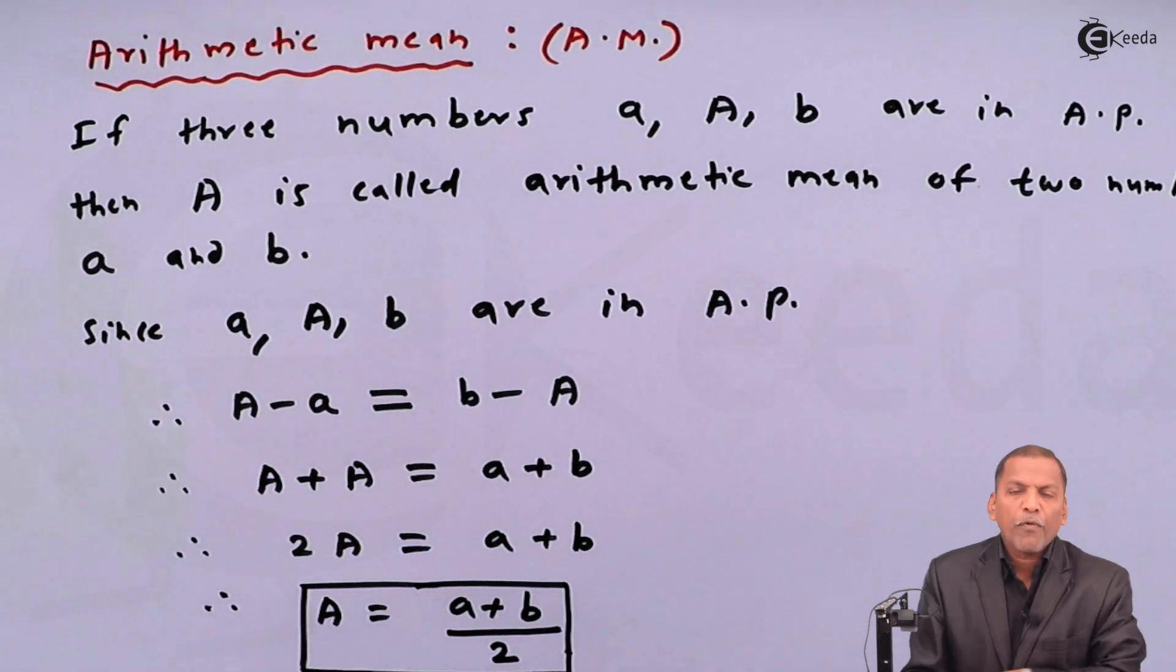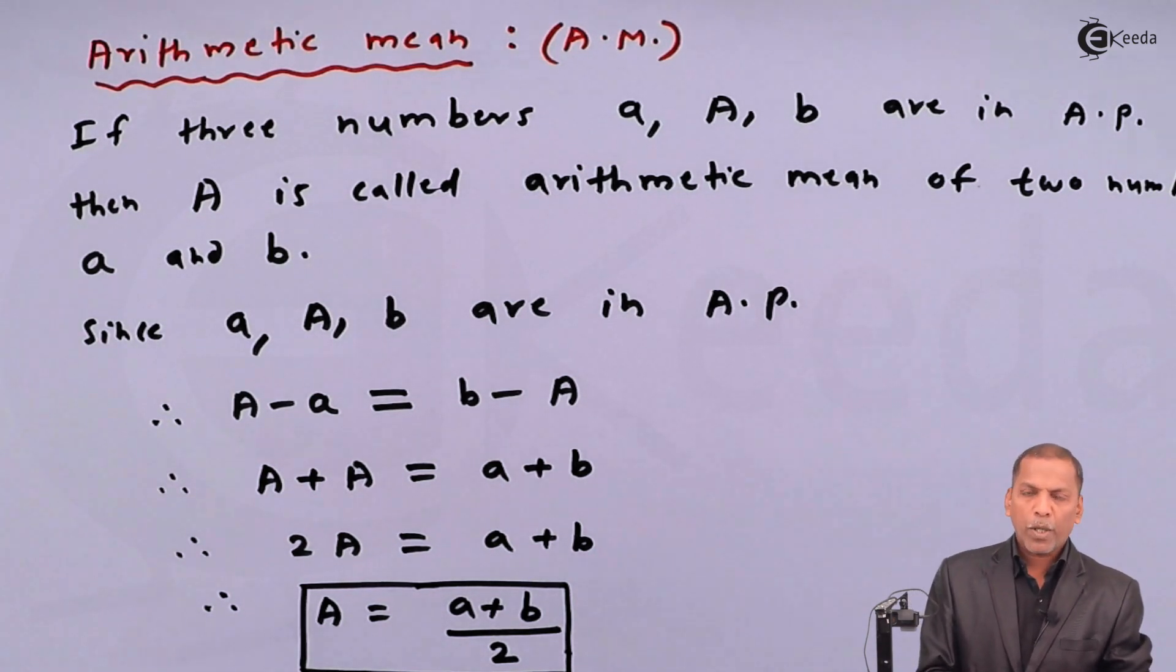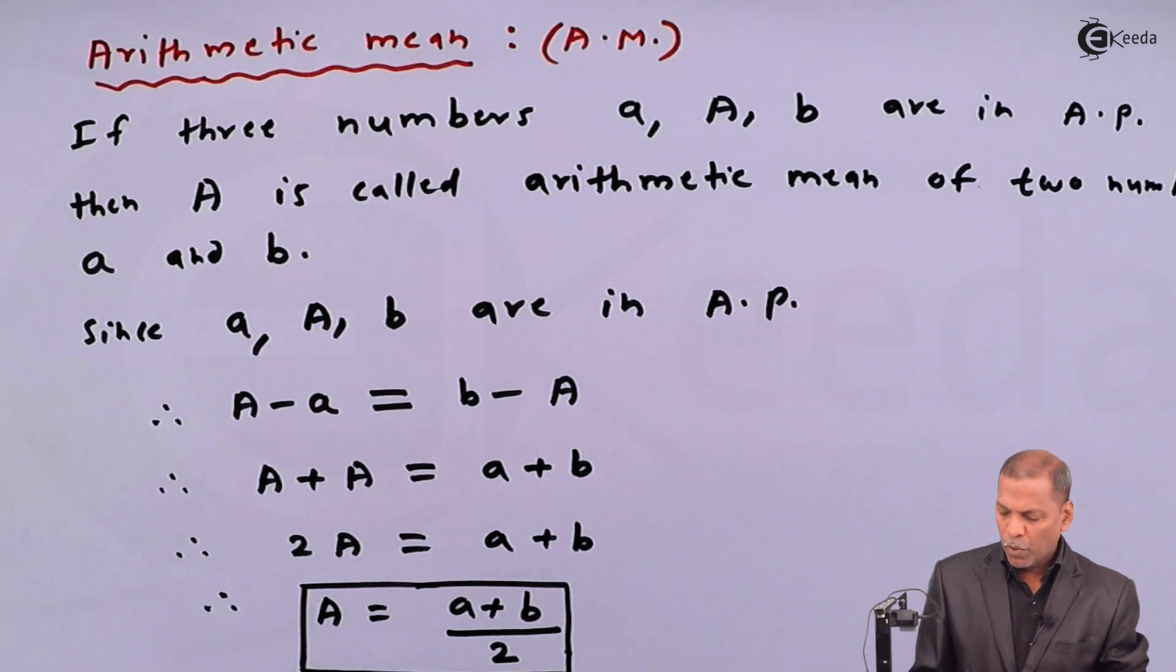So, in this way, arithmetic mean between two numbers, that is arithmetic mean capital A of two numbers small a and small b, is given by capital A is equal to a plus b upon 2.